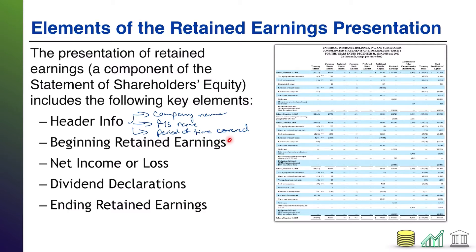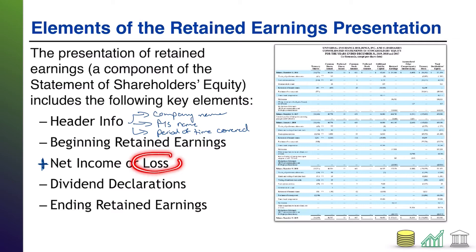There are four essential components. First, what retained earnings did the company start with? Second, how much additional earnings or loss did they get during the period? Third, did they give any earnings back to investors — known as a dividend? And fourth, how much in earnings do they end the period with? This is really just a mathematical equation. Retained earnings is the income you've previously earned that you held within the company to fund future operations. Beginning retained earnings plus net income minus dividends equals ending retained earnings.